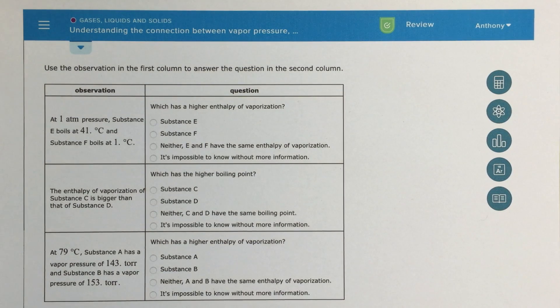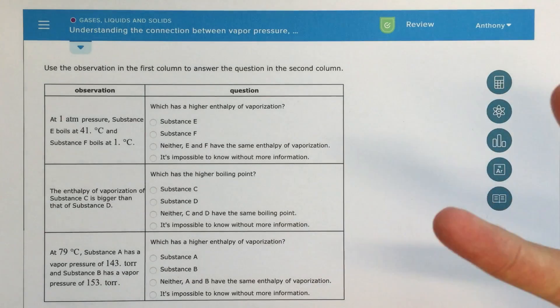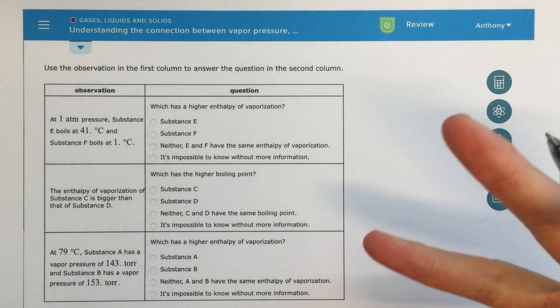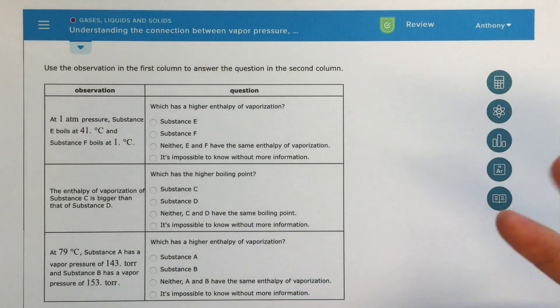Alright class, so this is an ALEX topic that's called understanding the connection between vapor pressure, enthalpy of vaporization, and boiling point. And really the concept here is just the relationship between those different values.